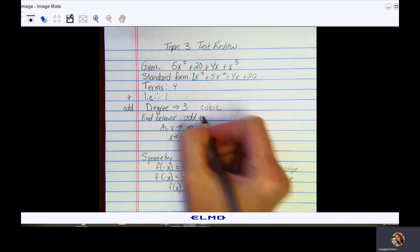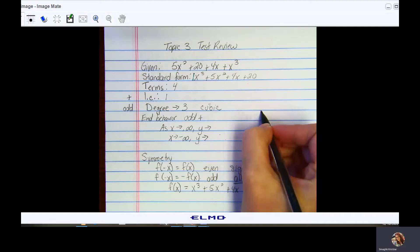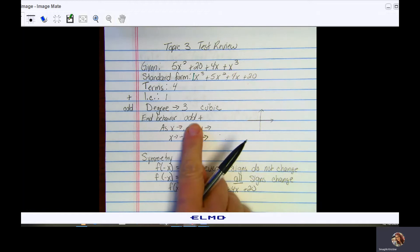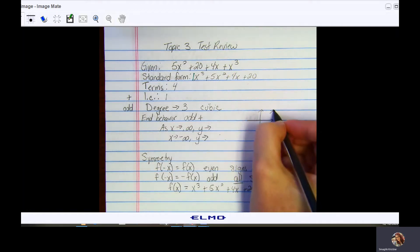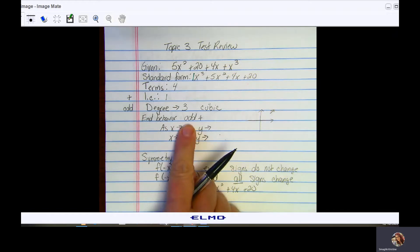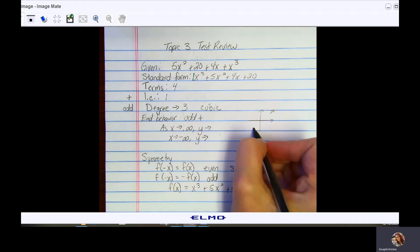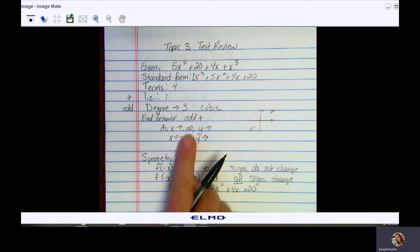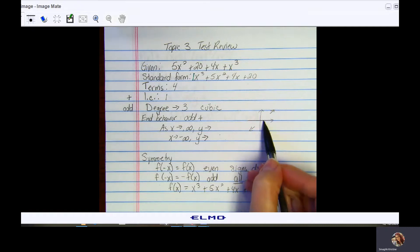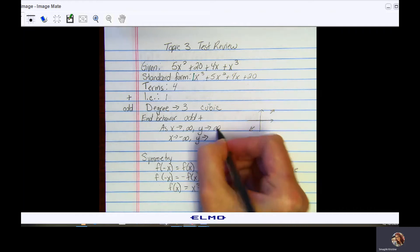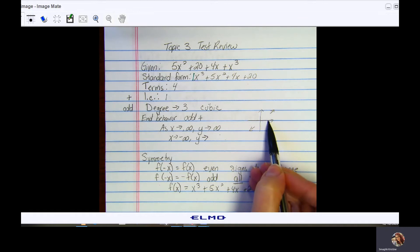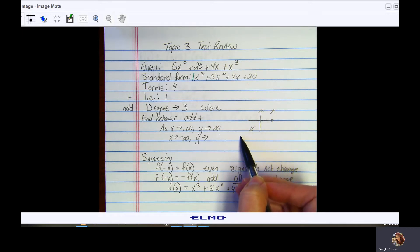So your end behavior is odd positive. When we're talking end behavior, we're looking at the direction the graph is moving. If your end behavior is ever positive, you've got something going up and to the right. If your degree is odd, your end behavior goes in opposite directions. As x approaches positive infinity, my y values are also getting bigger, going up to positive infinity. As x approaches negative infinity, my x values are getting smaller and smaller, and my y values are also getting smaller, going down, so y is approaching negative infinity.